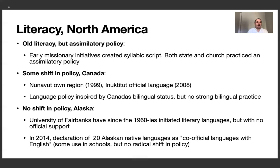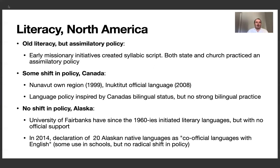In Alaska, the situation is even worse. There actually hasn't been any shift in the policy. The University of Fairbanks has since the 1960s initiated literary languages for all the languages for which there is a Wikipedia. But this work has not had any official support outside the university or the reservations. In 2014, Alaska declared 20 Alaska native languages as co-official languages with English, but with actually limited consequences for anything.